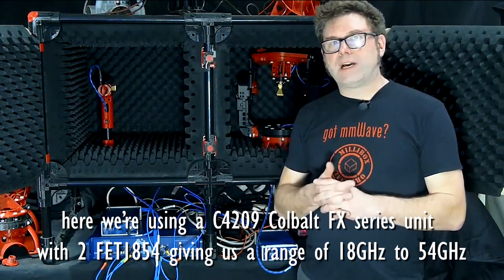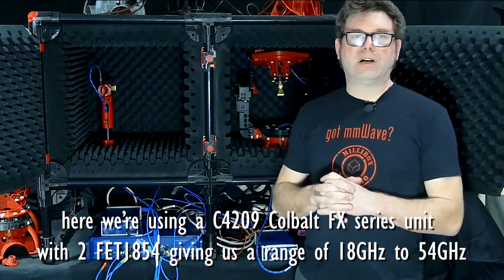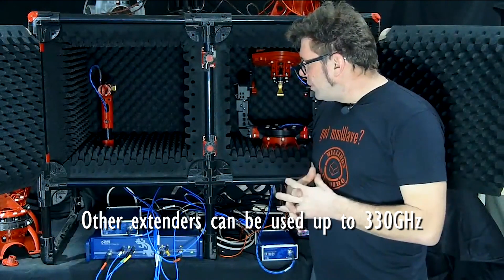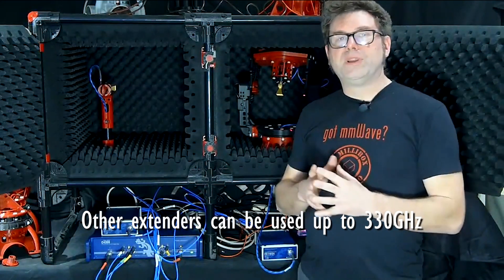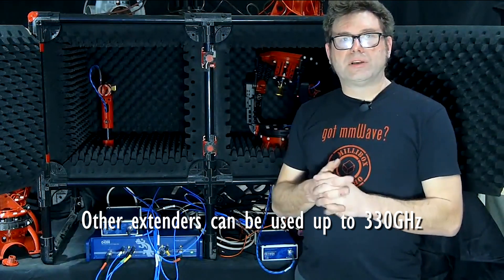So that's right in the lower band of the capabilities of Millibox, so that's great. And they have other extenders that can go up to 330 GHz, so that brings us in the sub-terahertz domain.